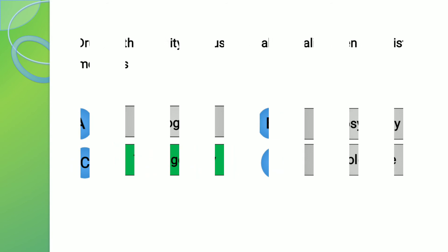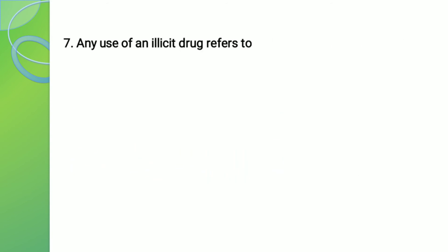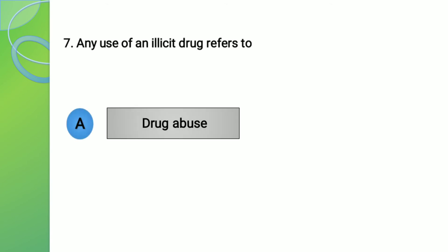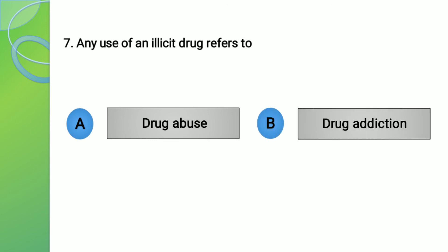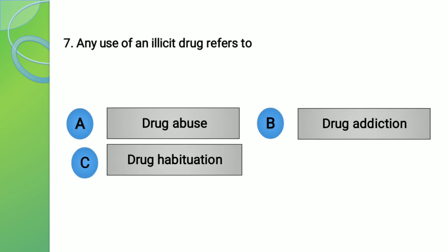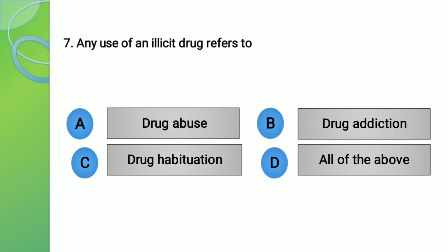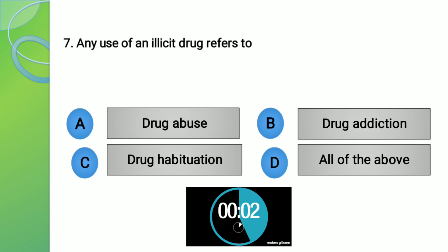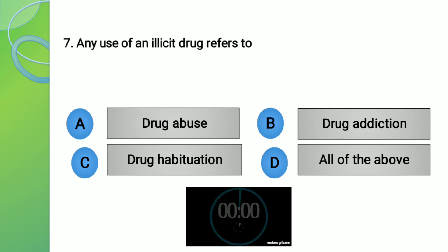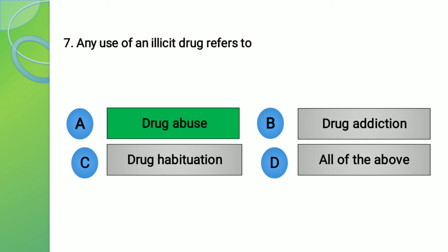Moving to question number 7. The question is: any use of an illicit drug refers to? The options are: A - Drug abuse, B - Drug addiction, C - Drug habituation, or D - All of the above. The right answer is option number A, that is drug abuse.